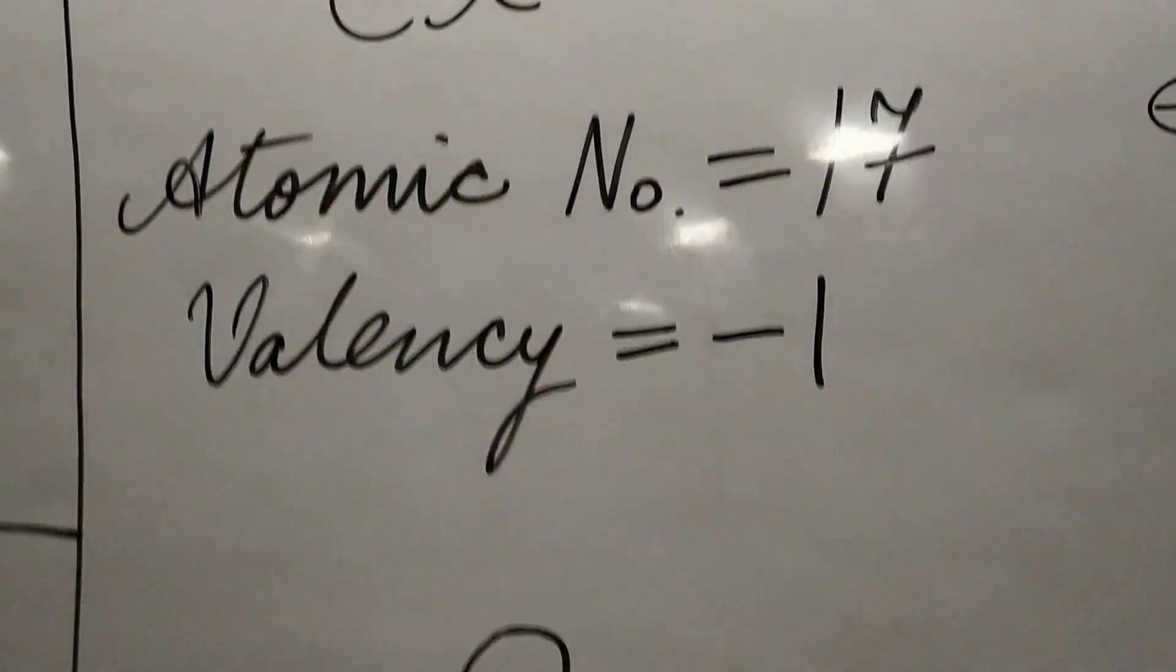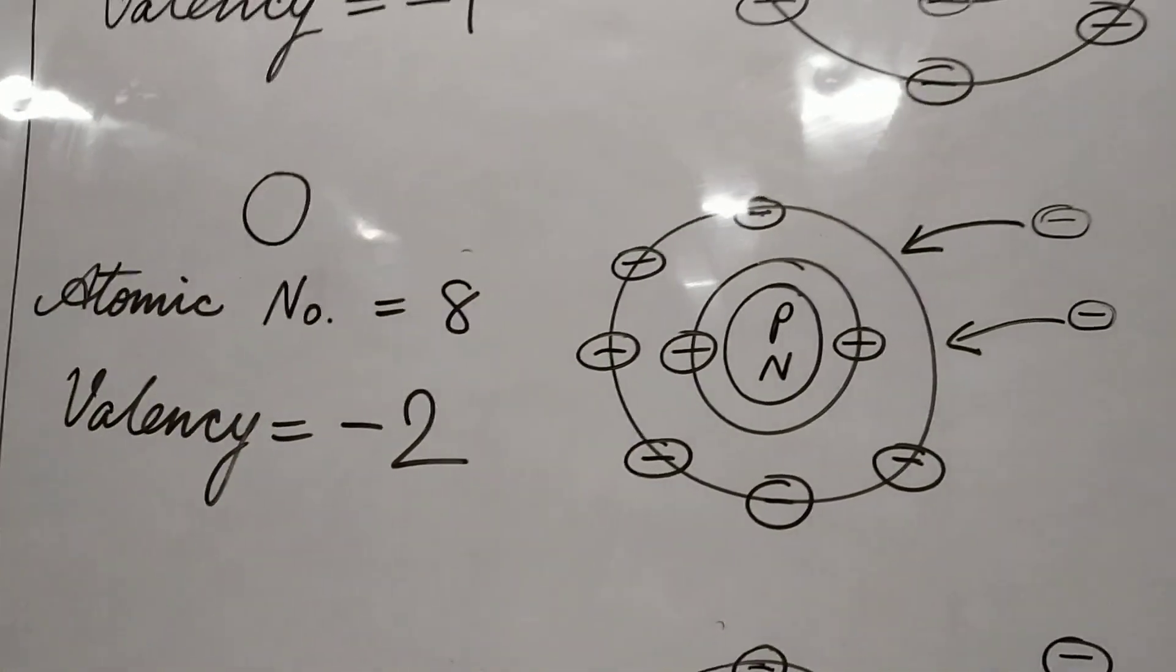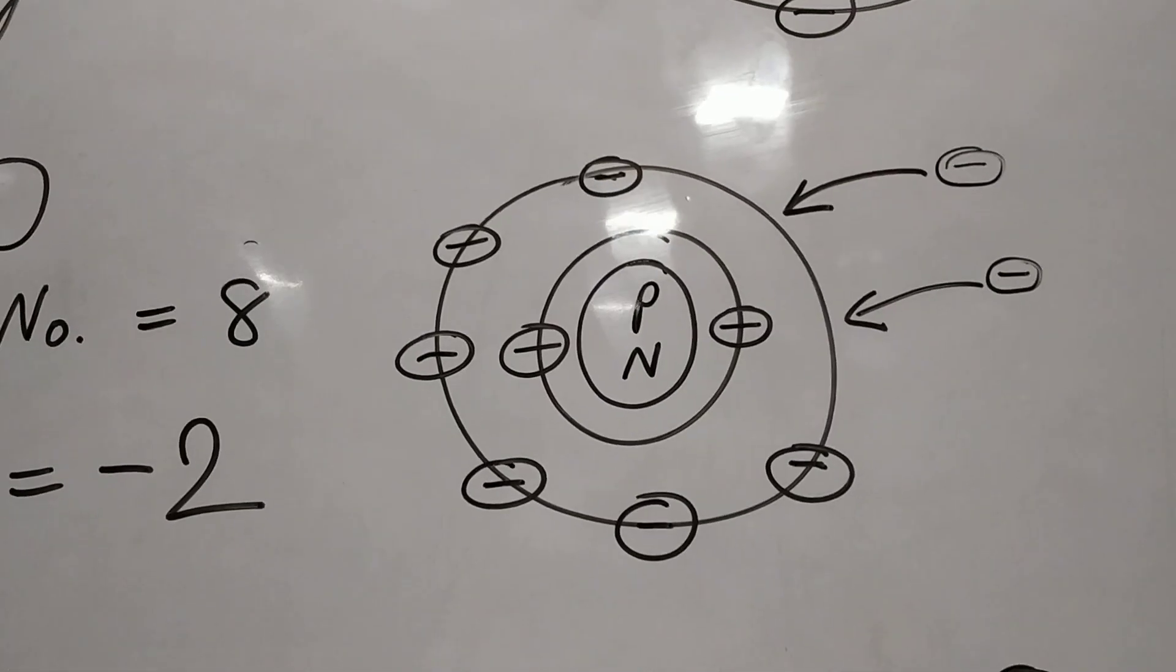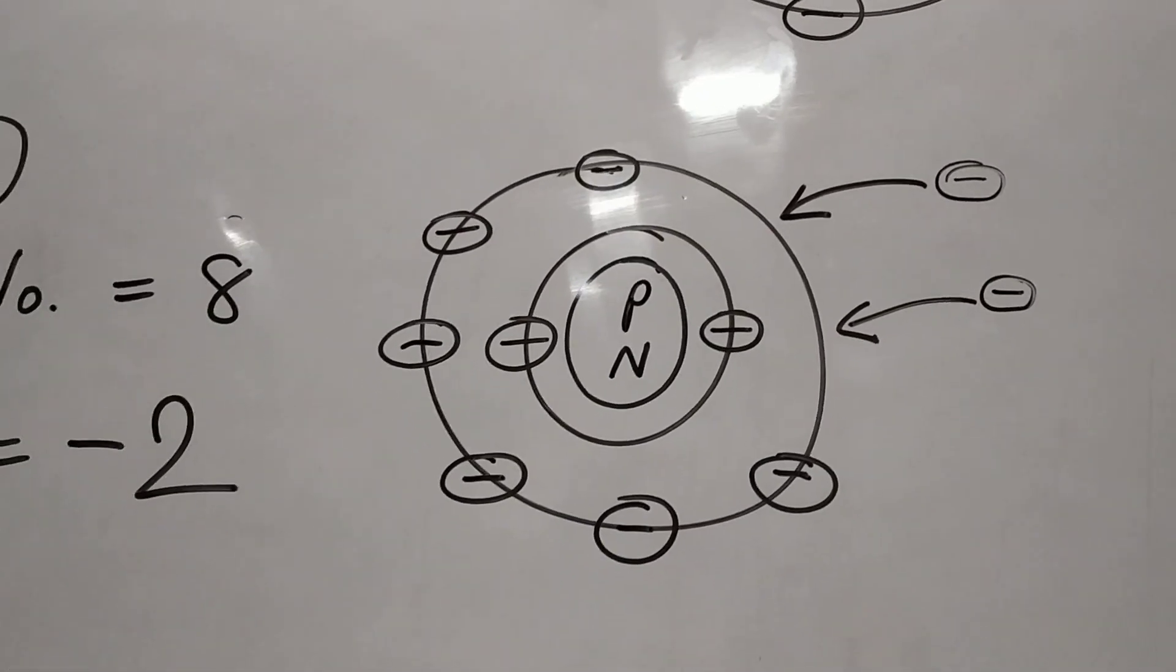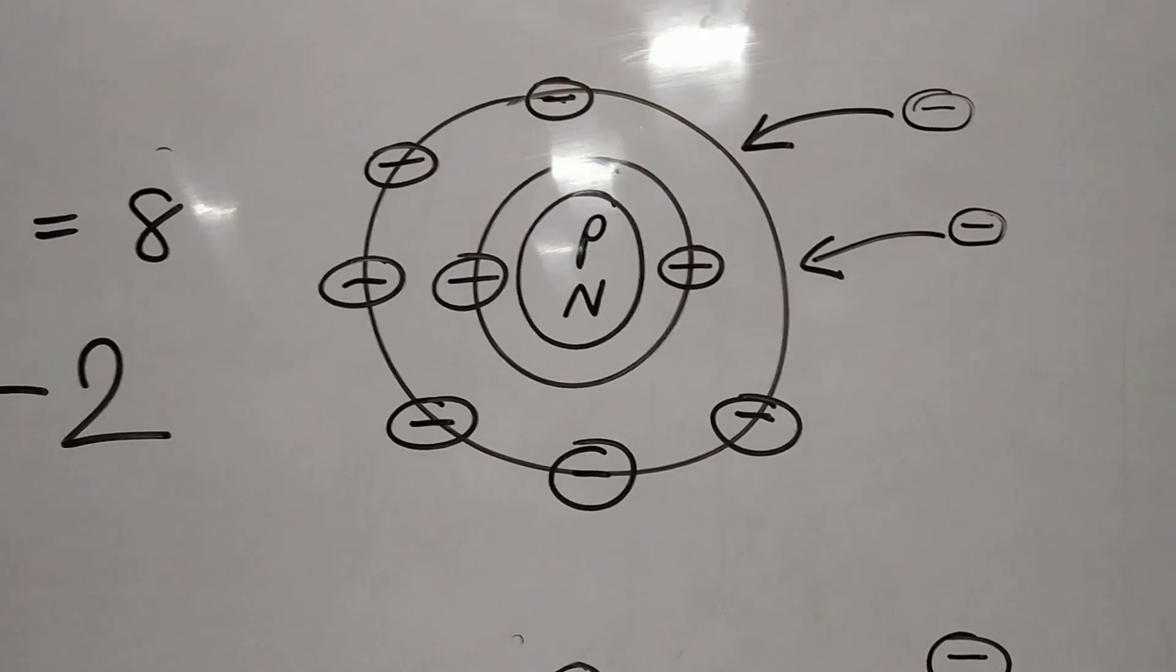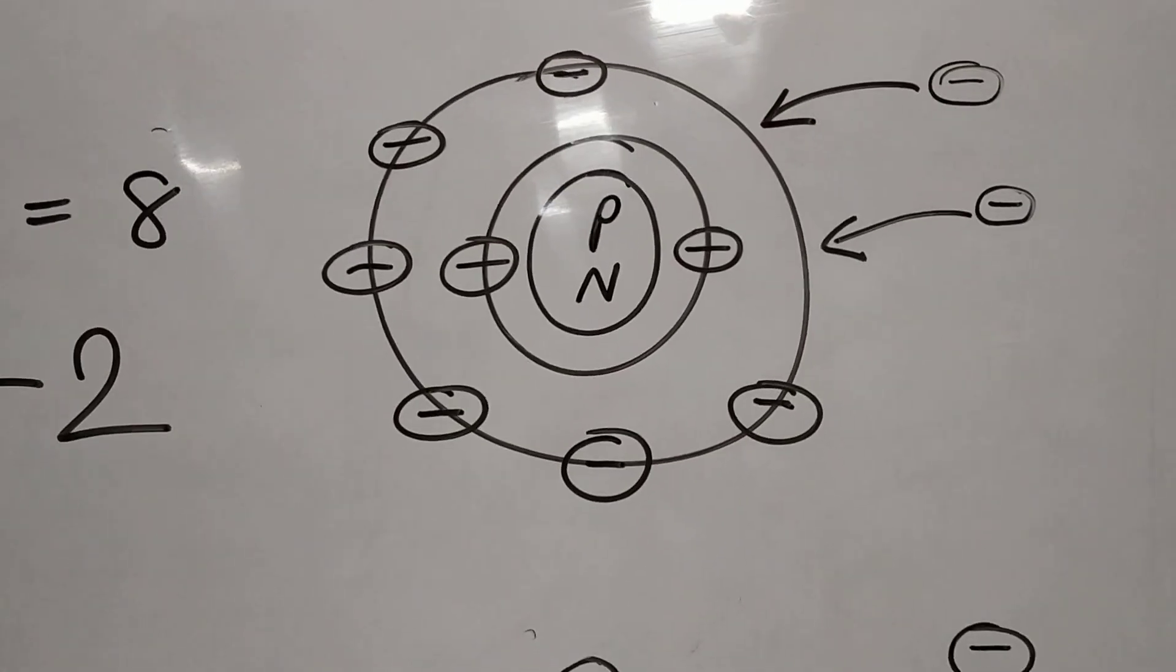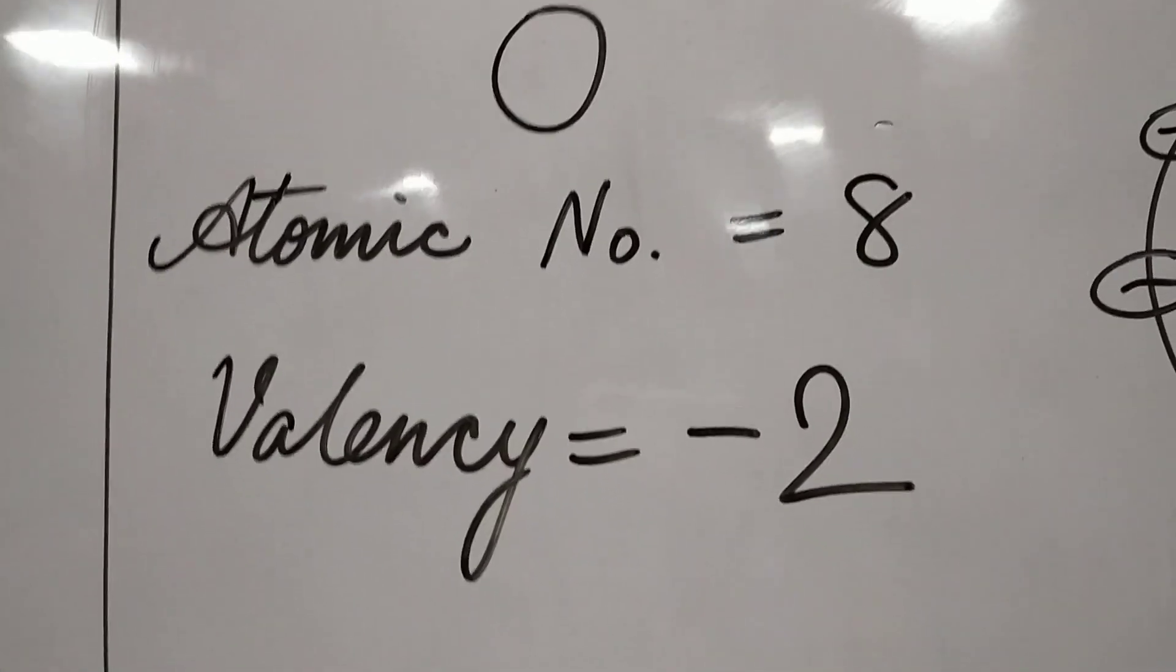Let us take another example. Oxygen, atomic number eight, the valency is minus two. First orbit has two, second orbit has six. So it is easier for it to accept two electrons to complete its octet. Since two electrons are entering, the overall charge in the atom becomes negative two. So the valency of oxygen is minus two.